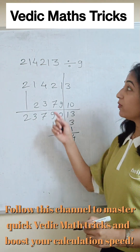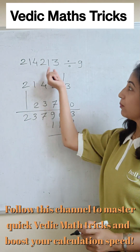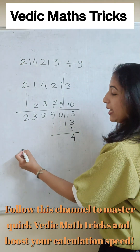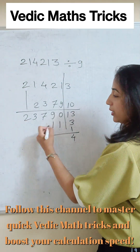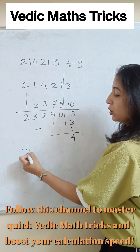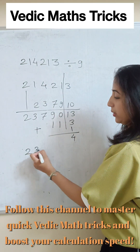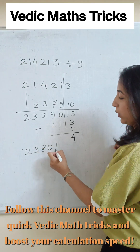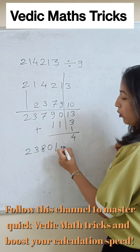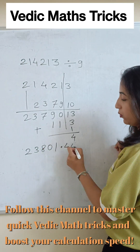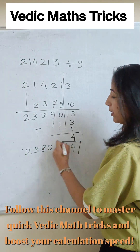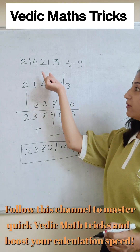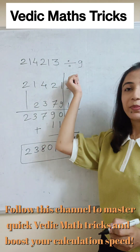That means if we divide this number by 9, our answer will be — taking the addition of the digits — 23801 remainder 4, or 23801.444... This will be our answer when dividing this number by 9.